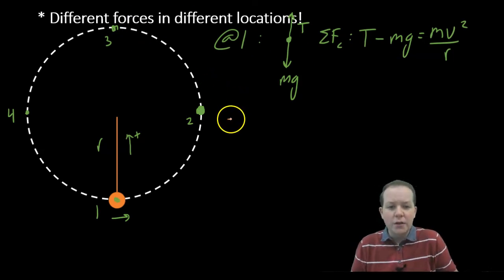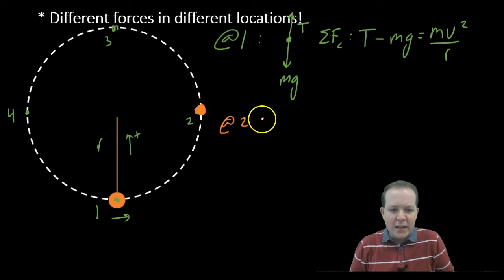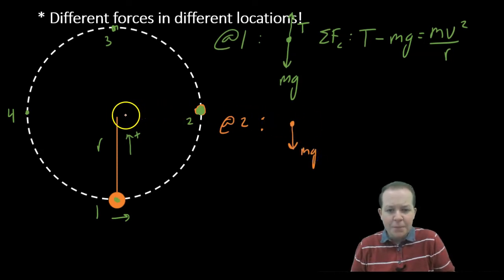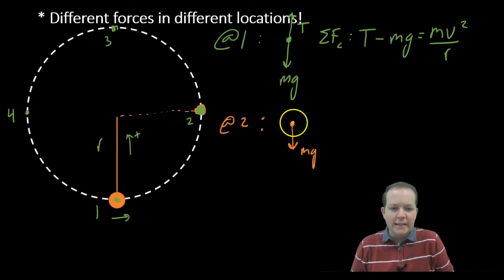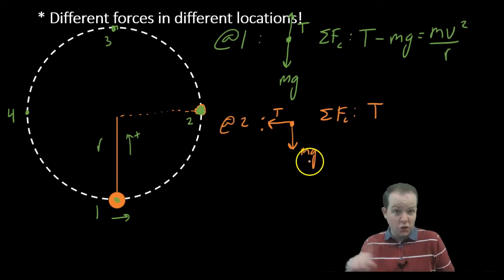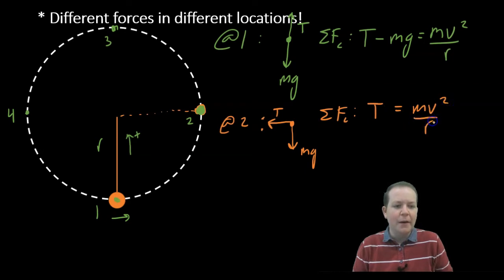Now at location 2, when the ball swings to the side: there's still weight acting straight down, and tension is now pointing horizontally towards the center. The sum of forces in the centripetal direction is just tension. Weight is perpendicular to the centripetal direction, so it doesn't affect it — I exclude it. Therefore: T equals mv²/r.